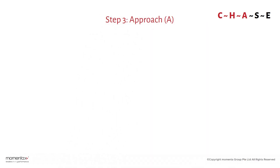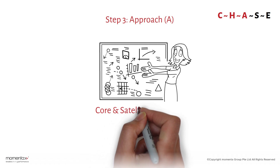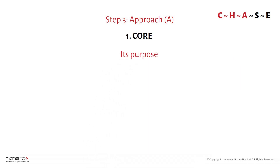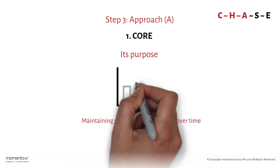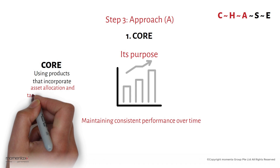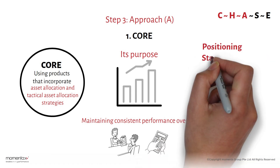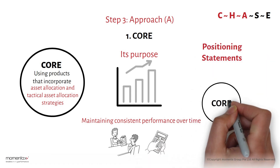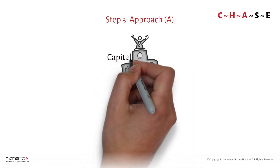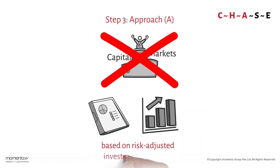Step three: Approach. Explain our strategic investment approach, specifically the core and satellite approach. First, explain the significance of the core, its purpose and the importance of maintaining consistent performance over time. Describe how the core is constructed using products that incorporate strategic asset allocation and tactical asset allocation strategies. Support your explanations with facts and figures, and use positioning statements if needed to emphasize the value of the core satellite approach. Emphasize that the core isn't about outperforming the capital markets, but ensuring a portfolio's consistent performance over time, based on a risk-adjusted investment approach.